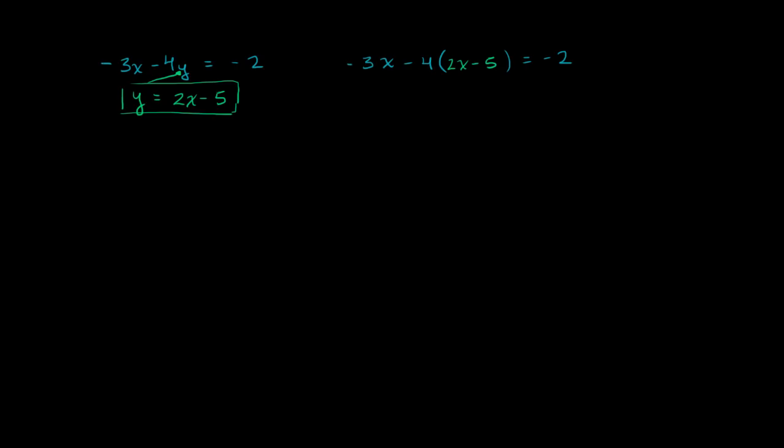So now we get just one equation with one unknown, and now we just have to solve for x. So it is negative 3x. And then this part right over here, we have a negative 4 that we want to distribute. We're going to multiply negative 4 times 2x, which is negative 8x. And then negative 4 times negative 5 is positive 20.